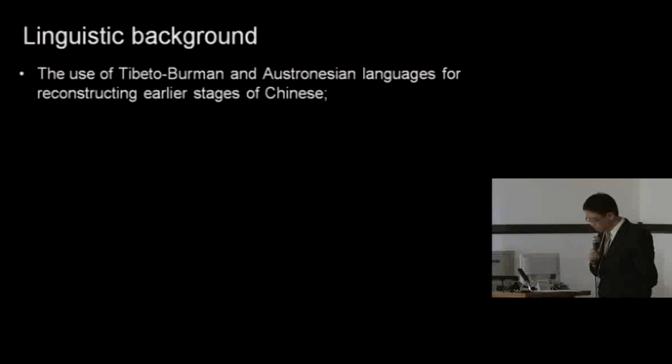I will begin by considering the linguistic background of ancient China. What we know about the spoken languages of ancient China presents a diverse, complex, but at the same time a quite realistic picture. Scholars in recent years are increasingly drawing on evidence from the Tibetan, Burman, and Austronesian languages to reconstruct the earlier status of Chinese.